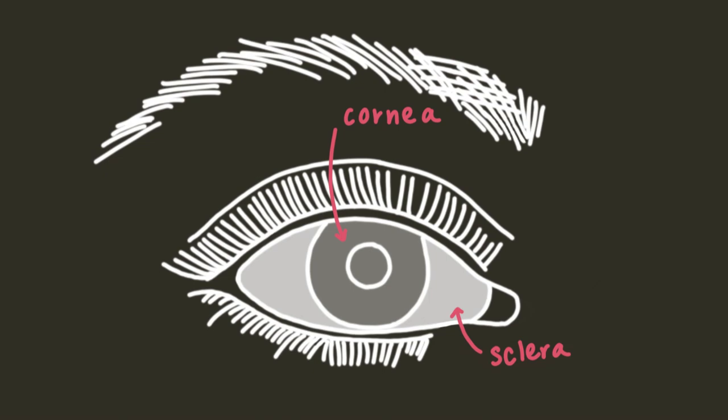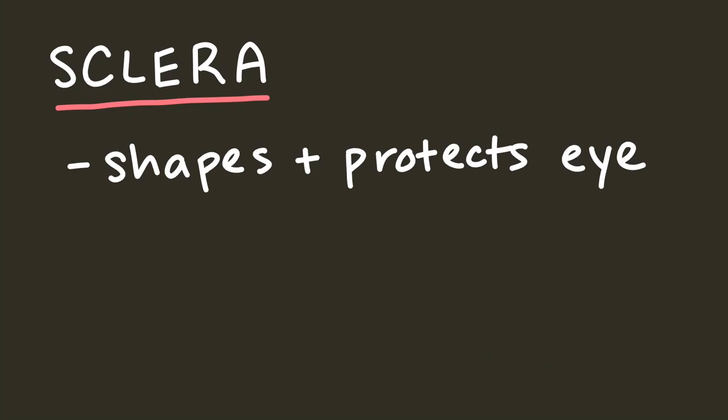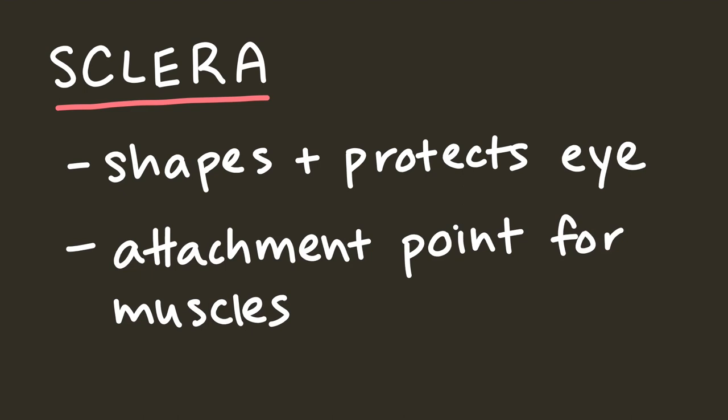Looking at the eye, we can see a white part and a non-white part. The white part is called the sclera and it shapes and protects the eye. It's also a place onto which muscles of the eye can attach.